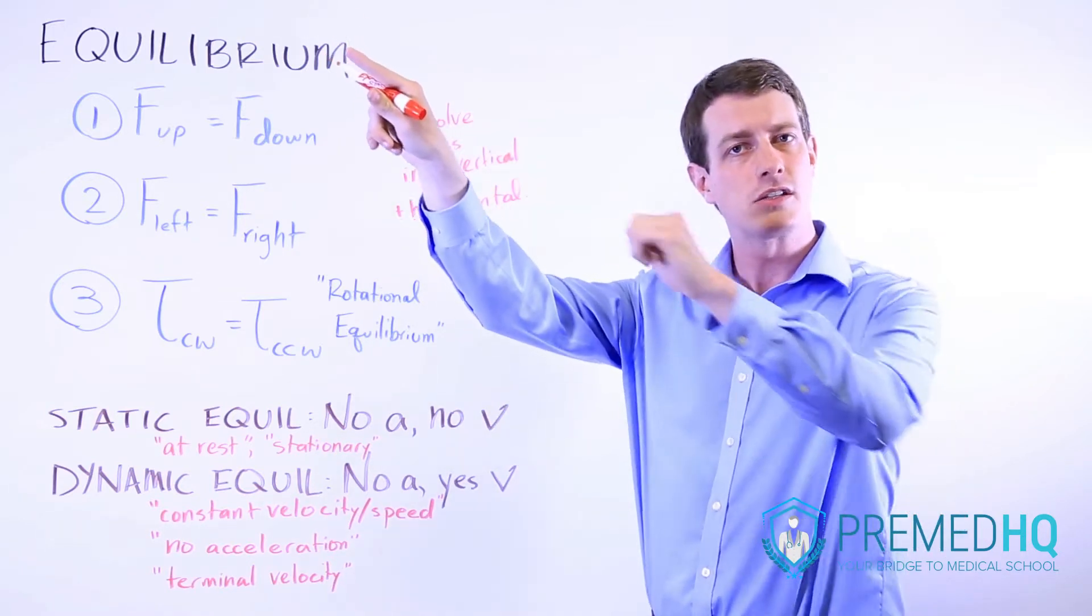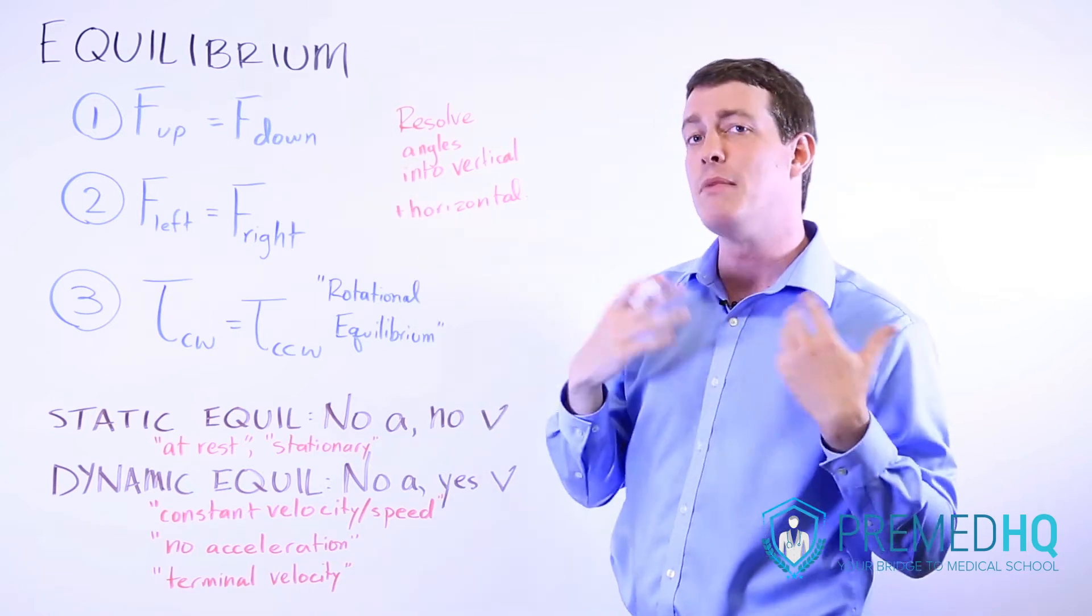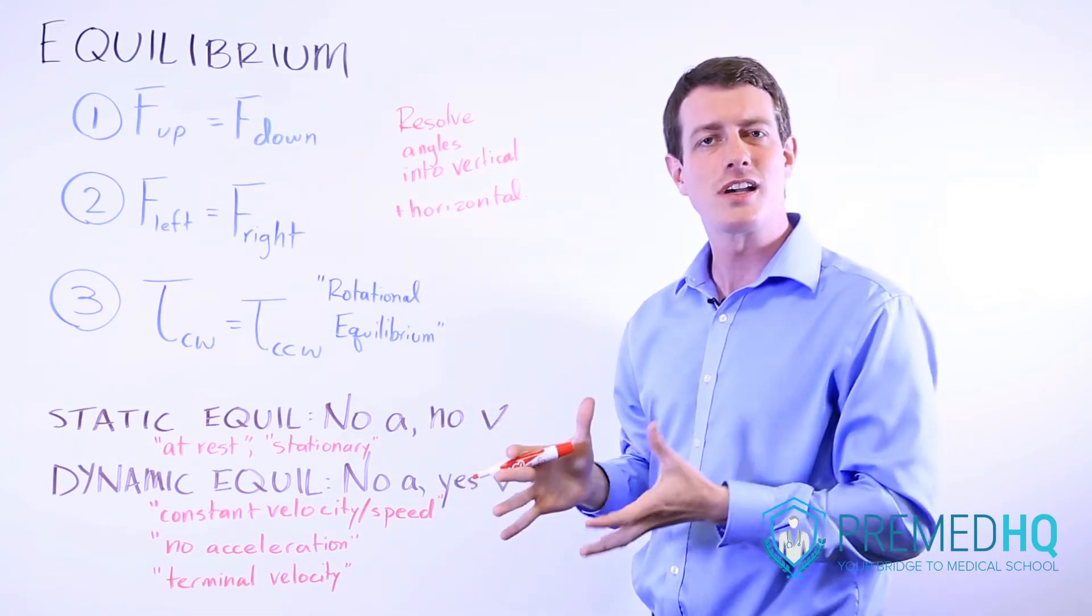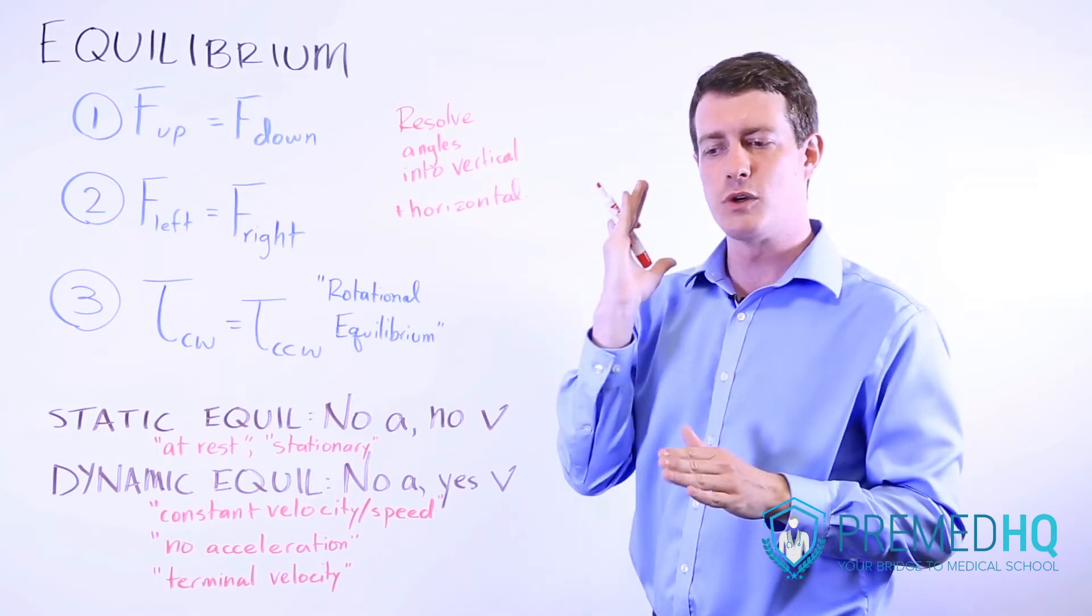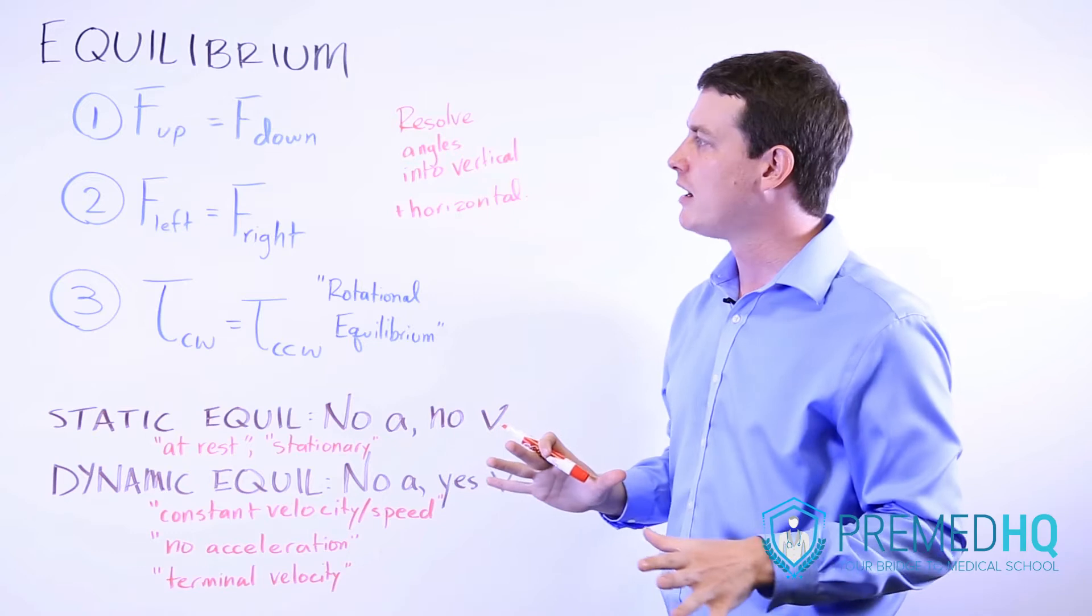...you want one to be heading in this way and one to be heading in the opposite direction. So that may involve sines and cosines and things like that. But you want to resolve all of your forces into a vertical and horizontal component, if at all possible.